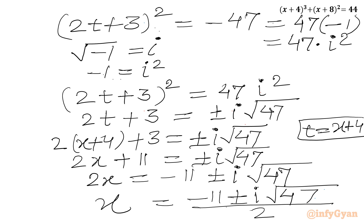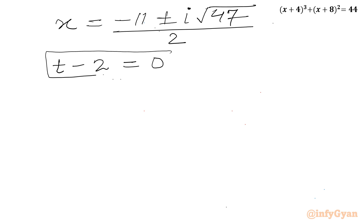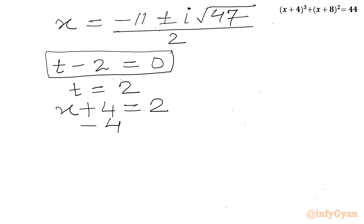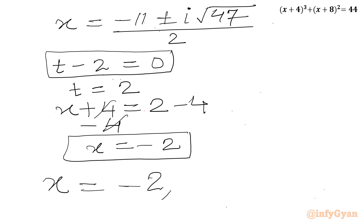So there are two complex solutions: x = (−11 ± i√47) / 2. Now for the first factor, t − 2 = 0 gives t = 2. Since t = x + 4, we have x + 4 = 2, so x = 2 − 4 = −2. Overall we have three solutions: x = −2 (real) and x = (−11 ± i√47) / 2 (complex).